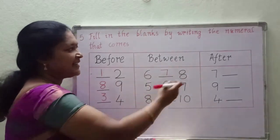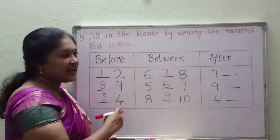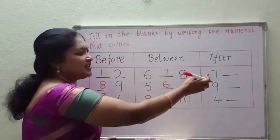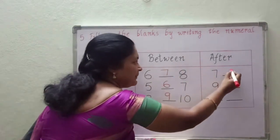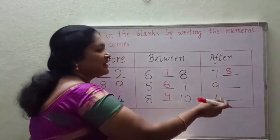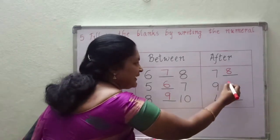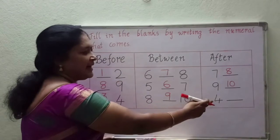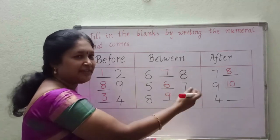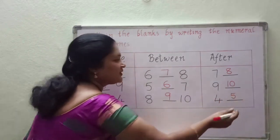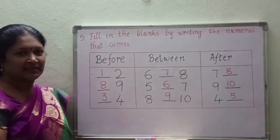And the next series is after numbers. Here they give some numbers and you have to write the after numbers — after number means the next number. First one: 7. So 7 after which number will come? 8. And the next one: 9. 9 after which number will come? 10. And what is this number? 4. 4 after which number will come? 5. So these are the before numbers, between numbers and after numbers.